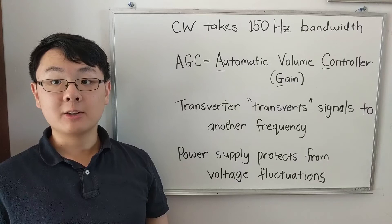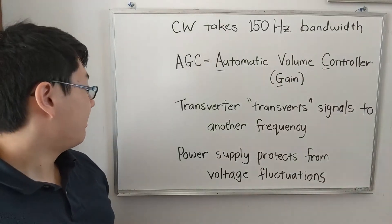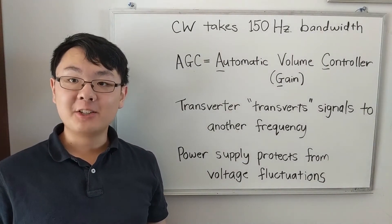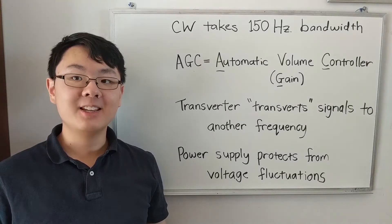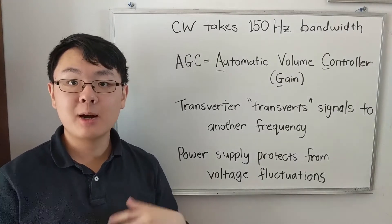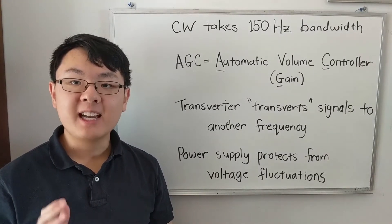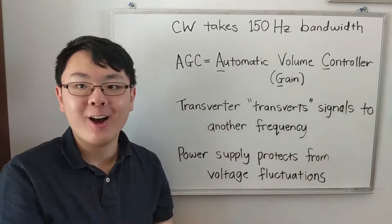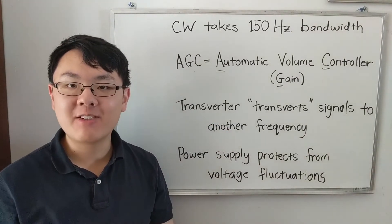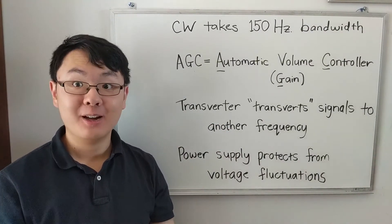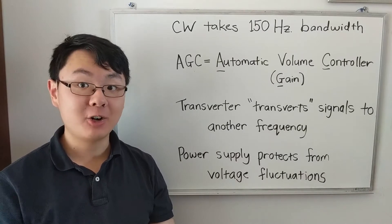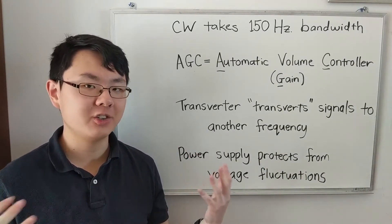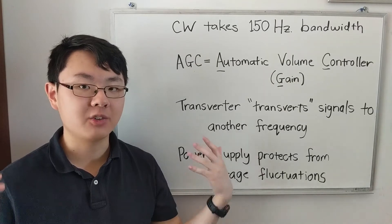Now we're going to talk about sensitivity. The ability of a receiver to detect a signal is called sensitivity. In order to hear and detect a tiny, weak signal on the air, a radio receiver must be very sensitive — which is why the term is sensitivity.